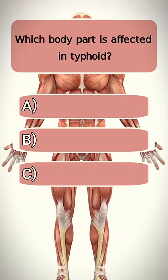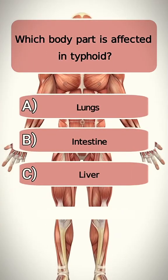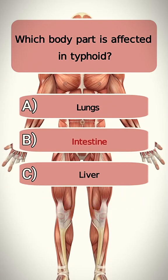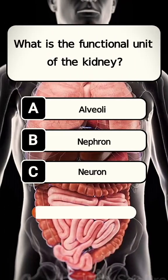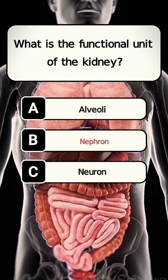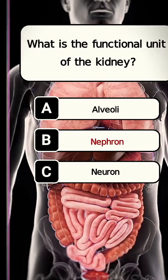Which body part is affected in typhoid? Answer B. Intestine. What is the functional unit of the kidney? Answer B. Nephron.